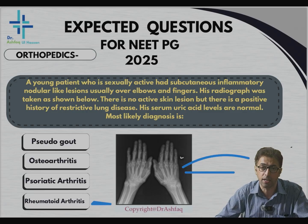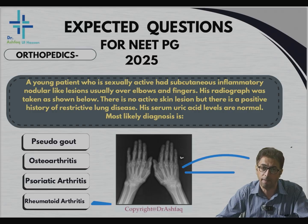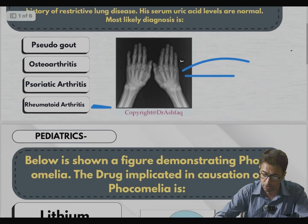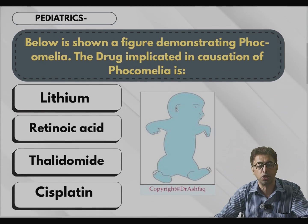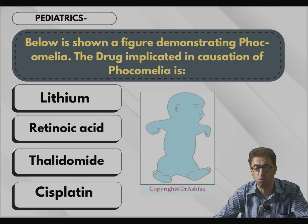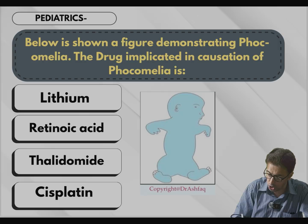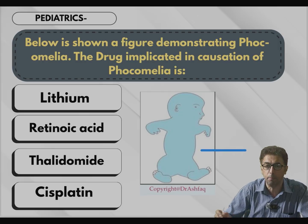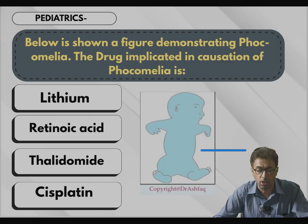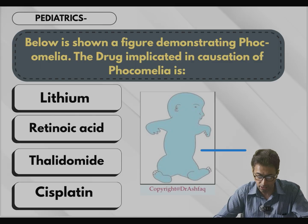This is how to arrive at an answer. This question is an image-based question with clues pointing toward rheumatoid arthritis. The second question is from pediatrics. The figure shown shows phocomelia. The drug implicated in causing phocomelia — the options given are lithium, retinoic acid, thalidomide, and cisplatin.